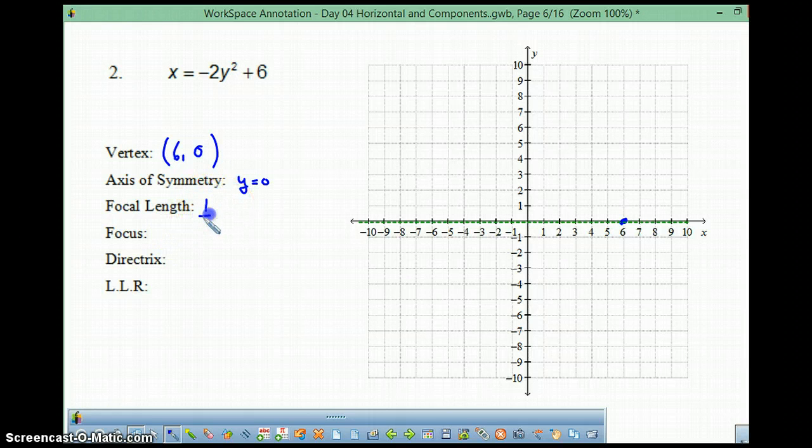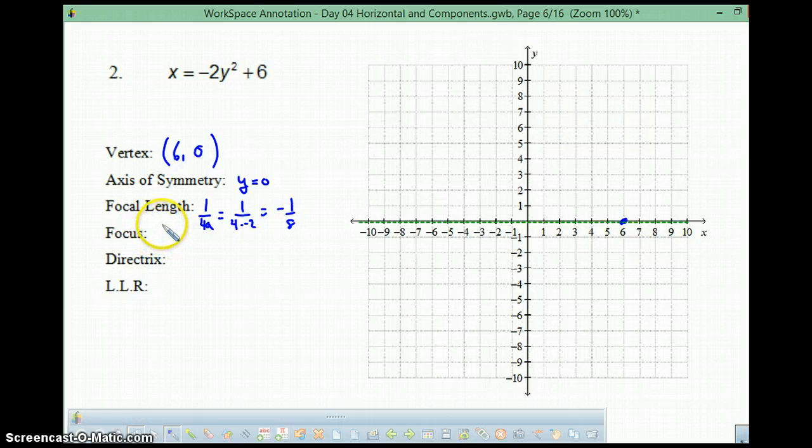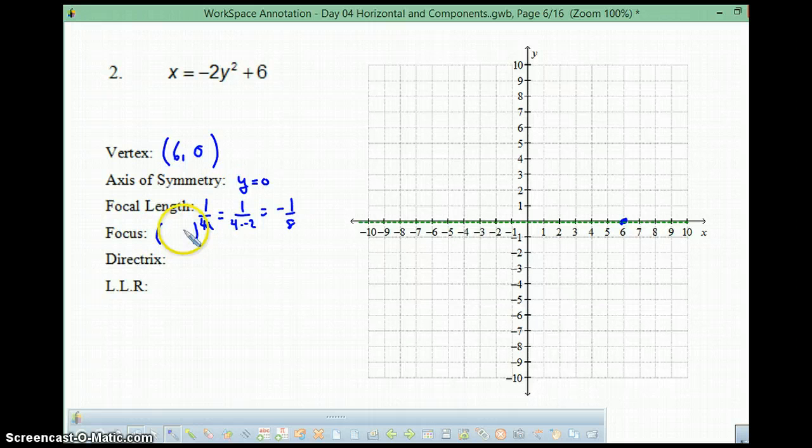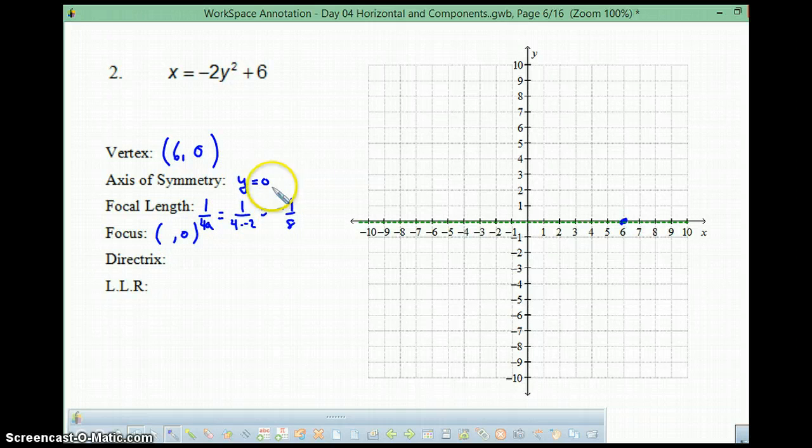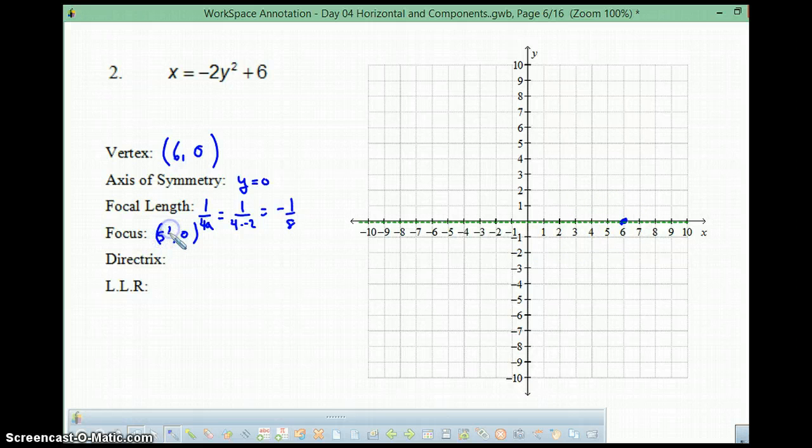The focal length, 1 over 4a equals, well, a is negative 2. So, you've got 1 over 4 times negative 2, which is negative 1/8. Okay. So, this is going to be really close. The focus then becomes, well, I know it's on this axis of symmetry. So, the y is 0. And negative 1/8, we started from 6. It's negative, so it's getting smaller. It's going to be 5 and 7/8. It's going to be right up close.